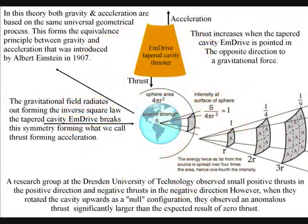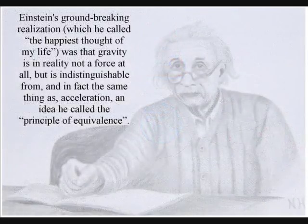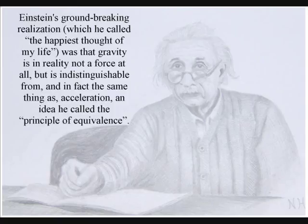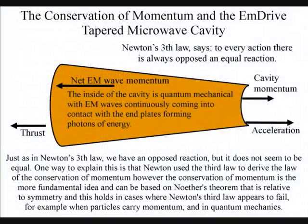But if we turn the tapered cavity around, the symmetry with the Earth's gravitational field is broken, and we will have what we call thrust, forming acceleration. We can see that both gravity and acceleration are based on the same universal geometrical process. This is supported by the equivalence principle between gravity and acceleration, introduced by Albert Einstein in 1907. If space and time are dependent on photon energy, then an m-derived cavity will form its own space-time, relative to the geometry of the m-derived and the rest of the universe.